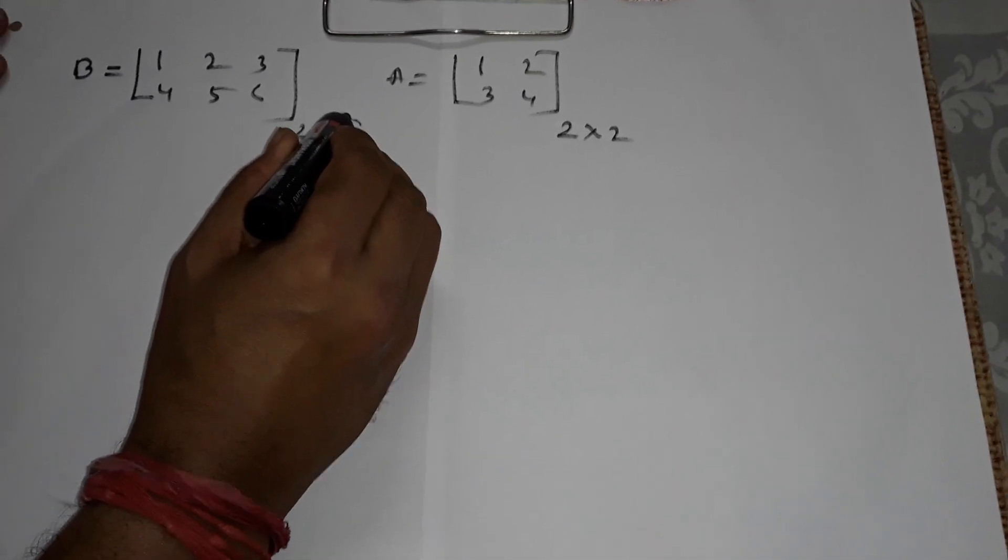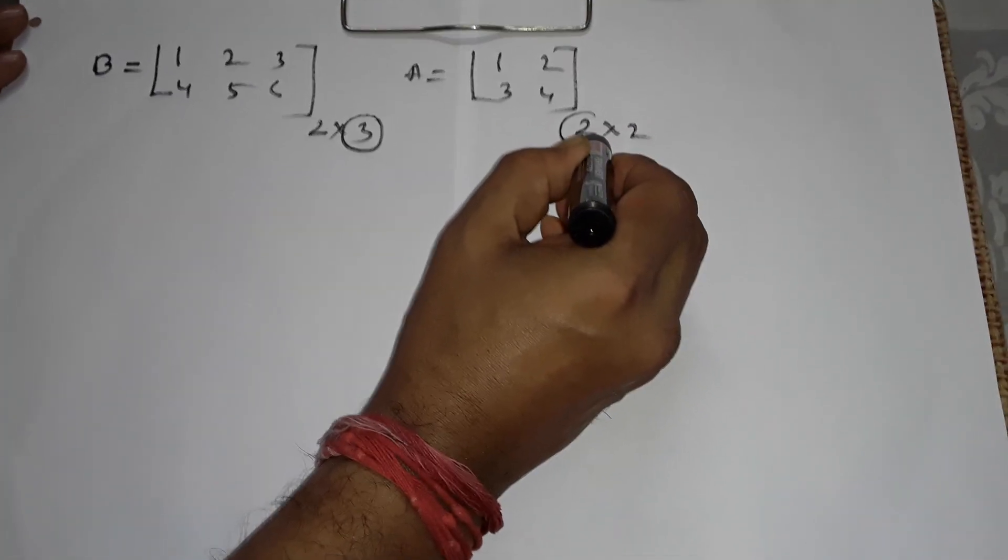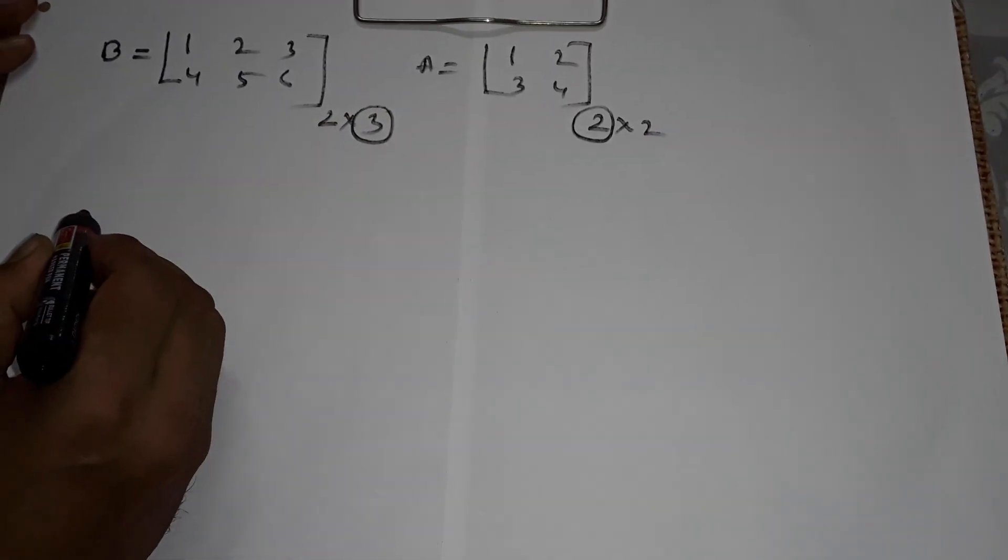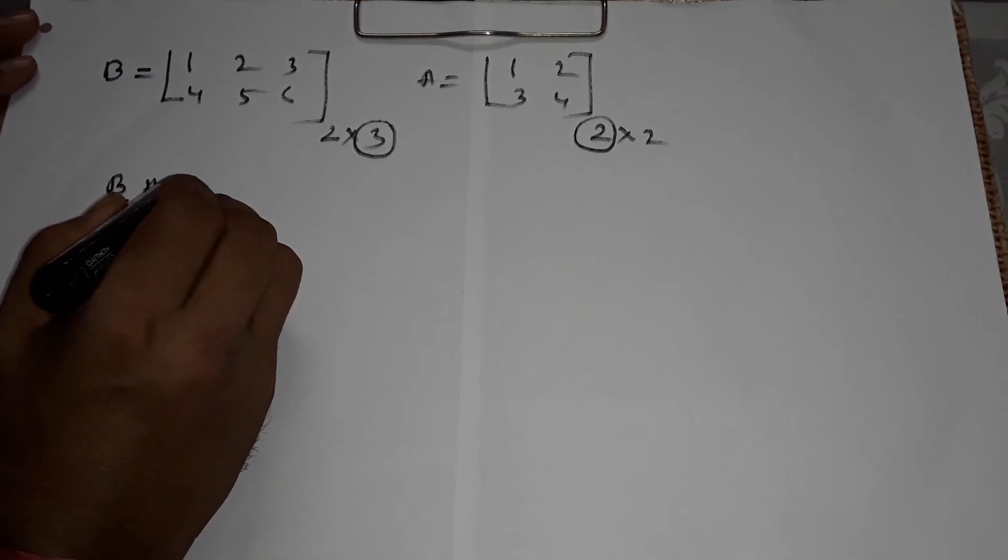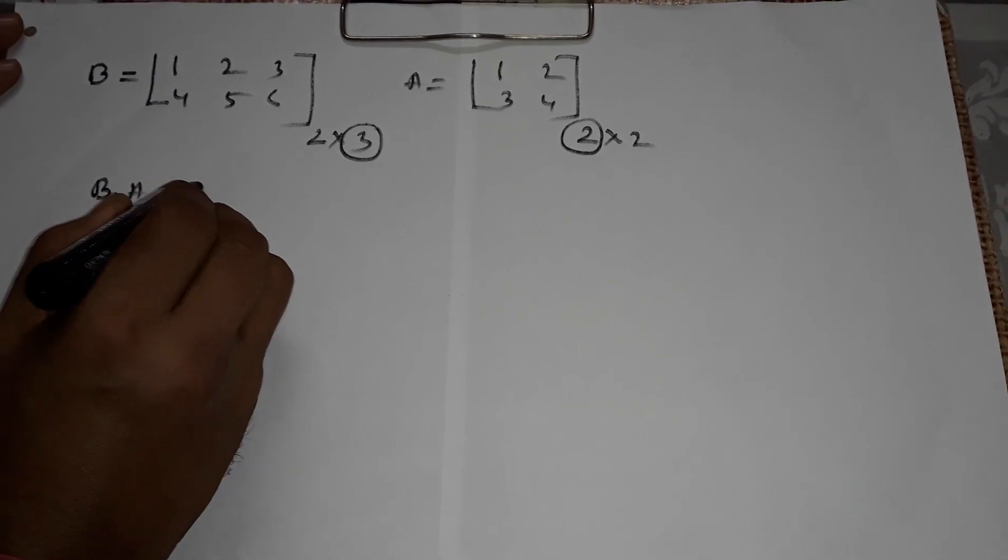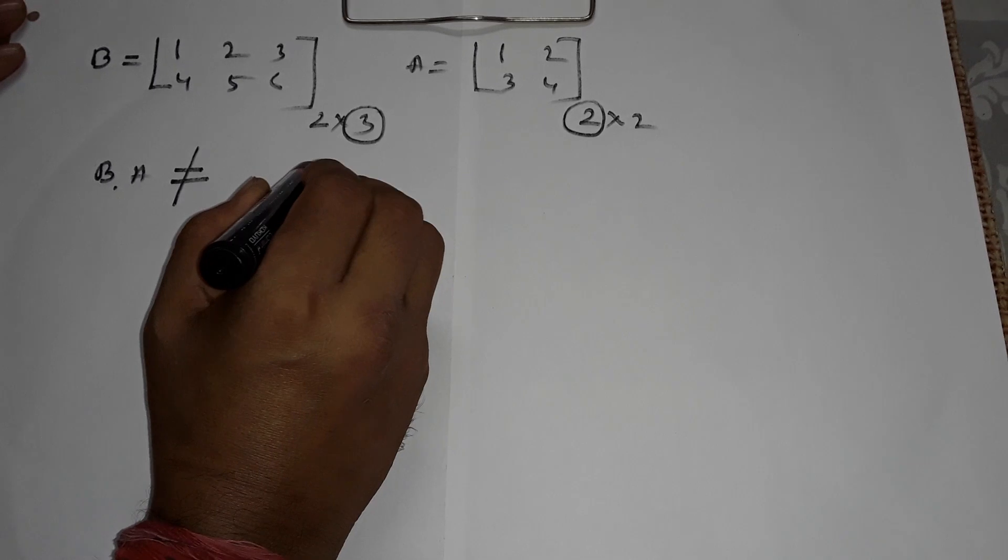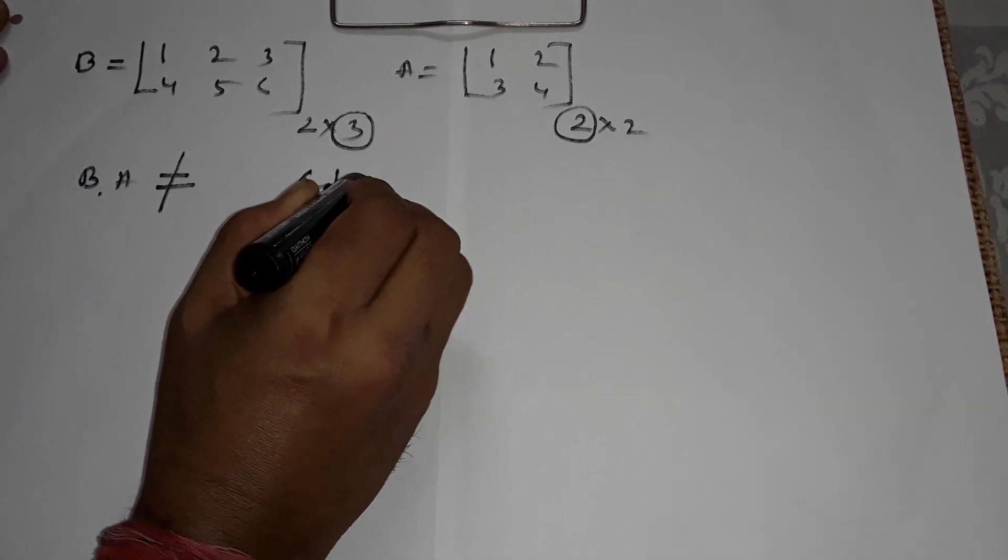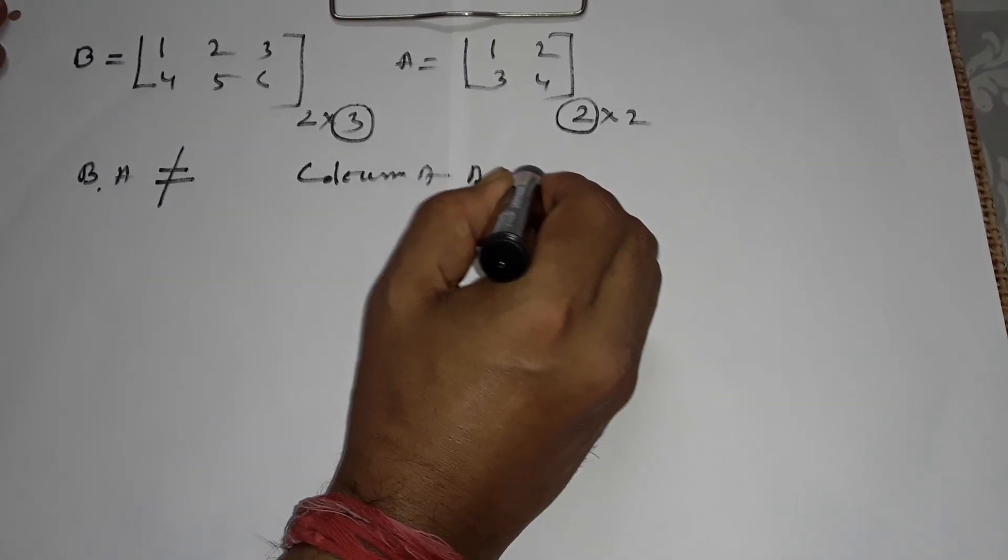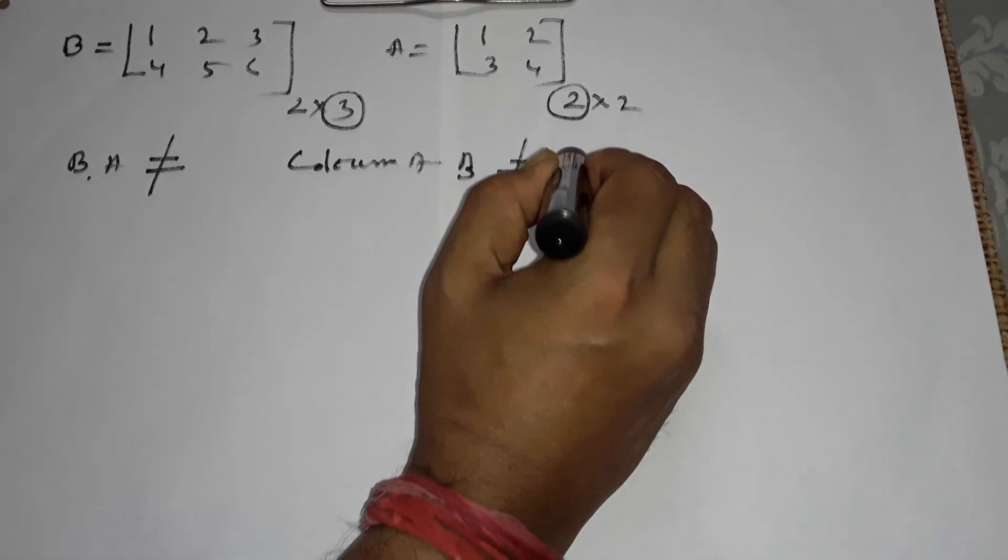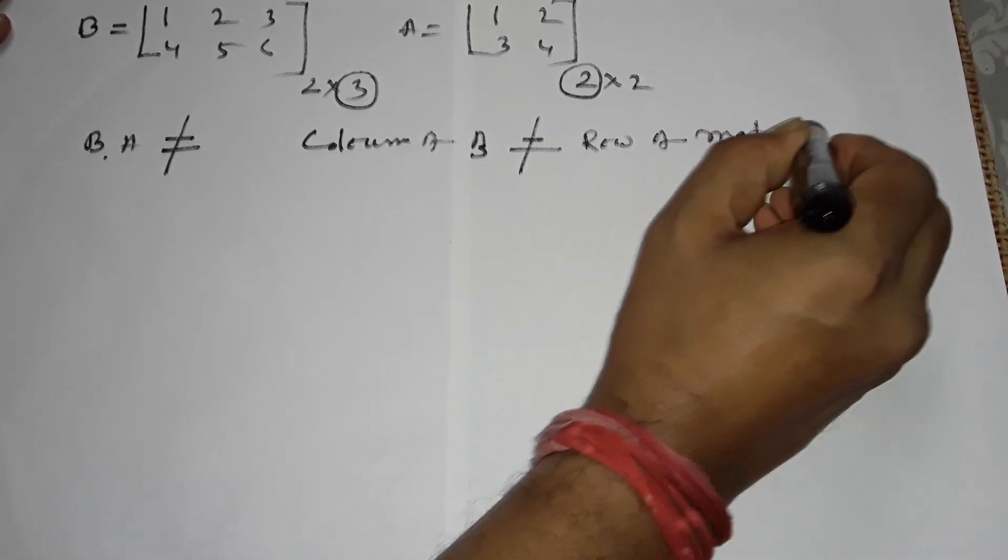You see, the column of this is 3 and the row of this is 2. So that means B into A we cannot multiply it, cannot multiply it because column of B is not equal to row of matrix A.